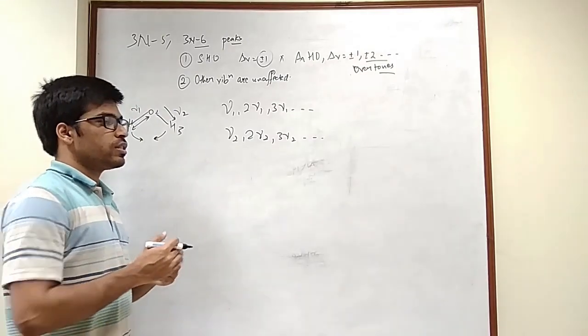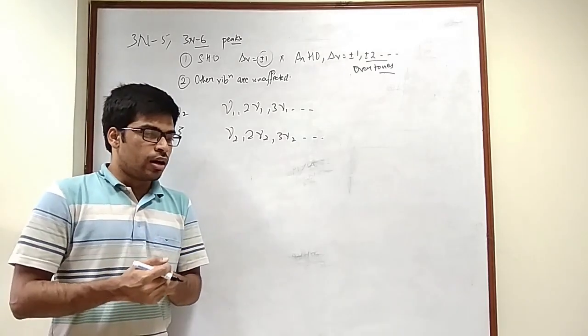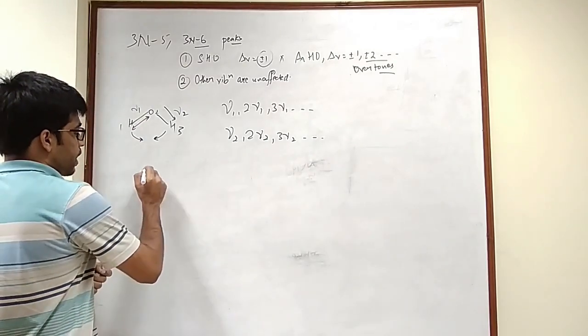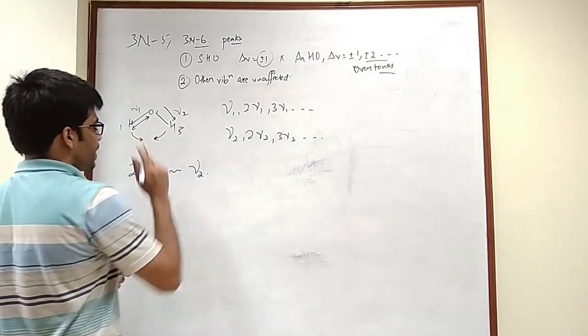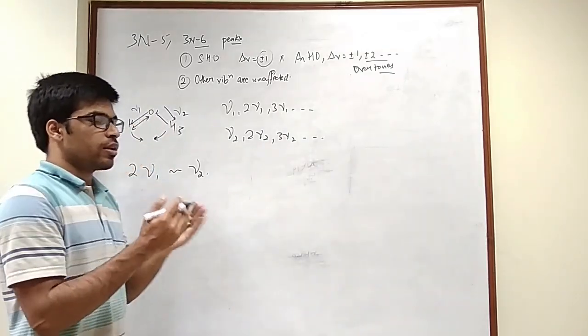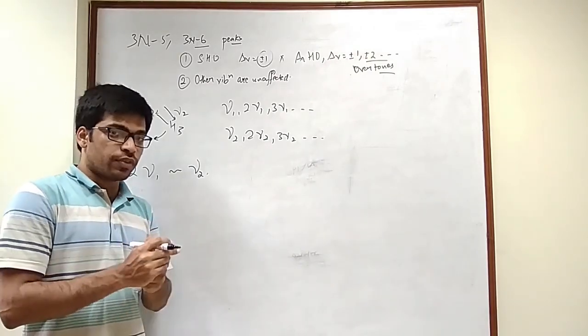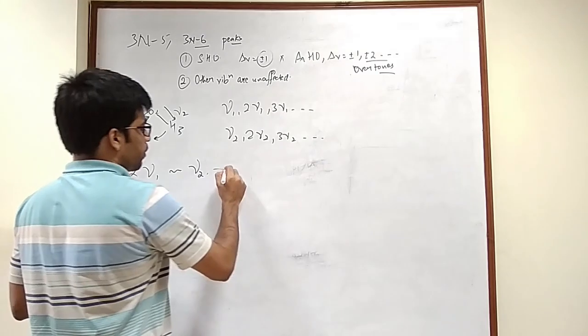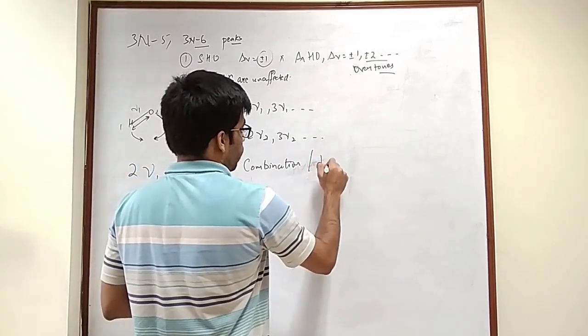When we see the experimental spectra that we get, we see that we have some new peaks and we are missing some peaks. That is because what happens most of the time or sometimes is that let's say 2mu1 has approximately same frequency as mu2. When they have very similar values of stretching frequency, it's possible for them to interact with each other and the selection rules do allow them to interact and form combination or difference bands.